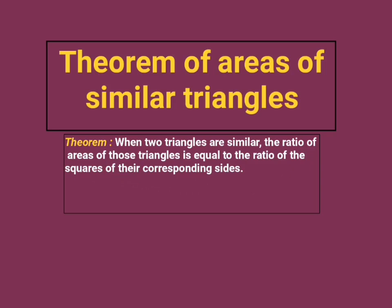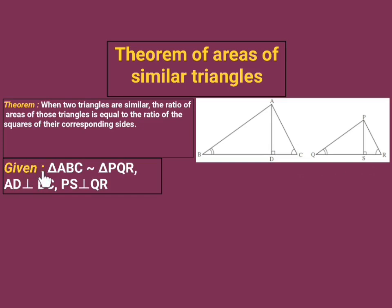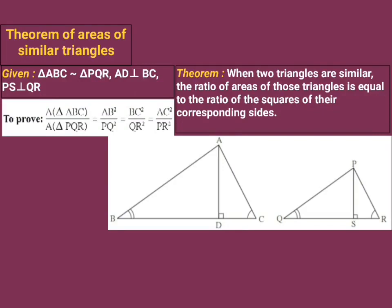Here we are to draw two triangles which are similar to each other. Here is our required diagram in which there are two triangles — triangle ABC and triangle PQR — and these two triangles are similar to each other. Given: triangle ABC is similar to triangle PQR; AD is perpendicular to BC and PS is perpendicular to QR.